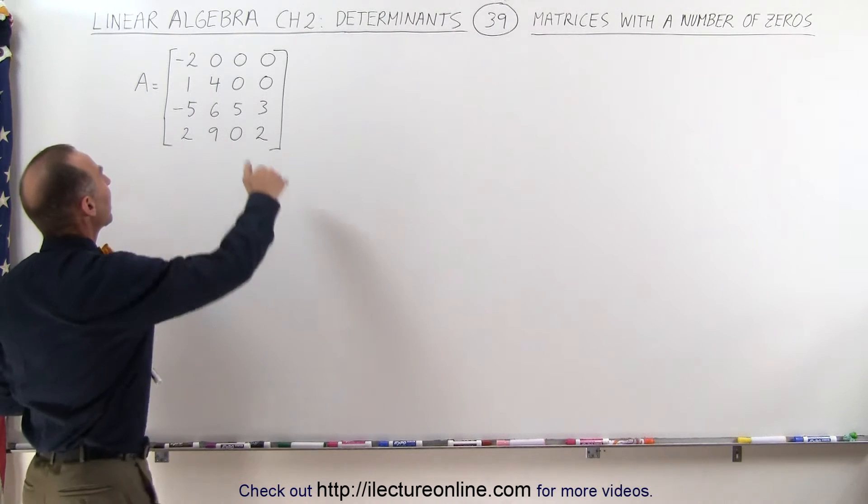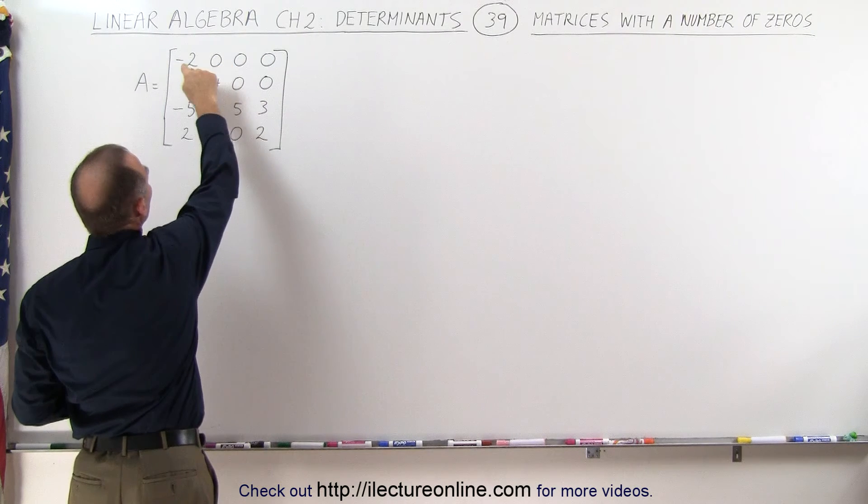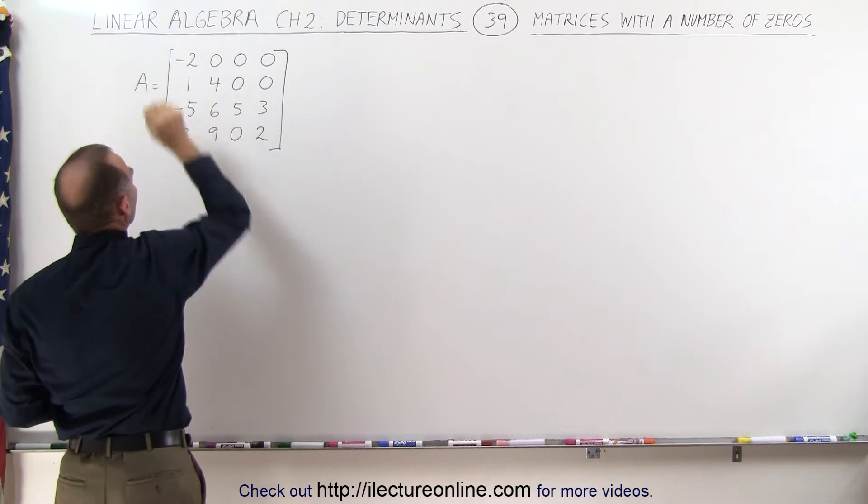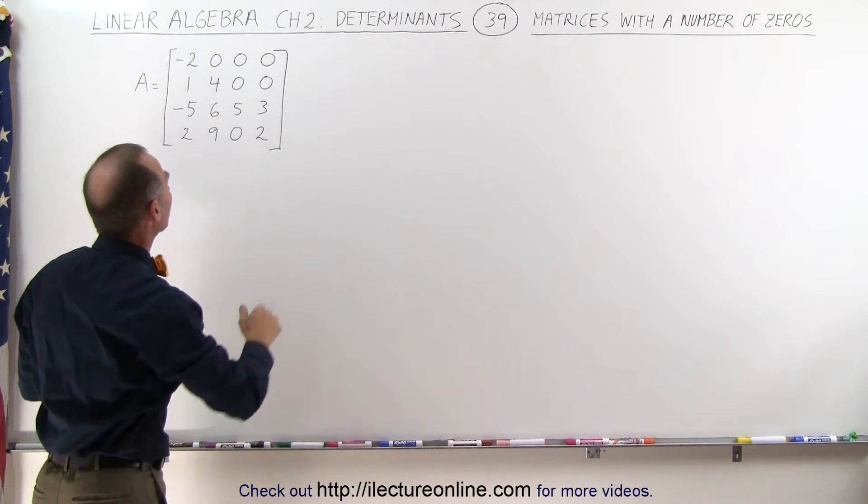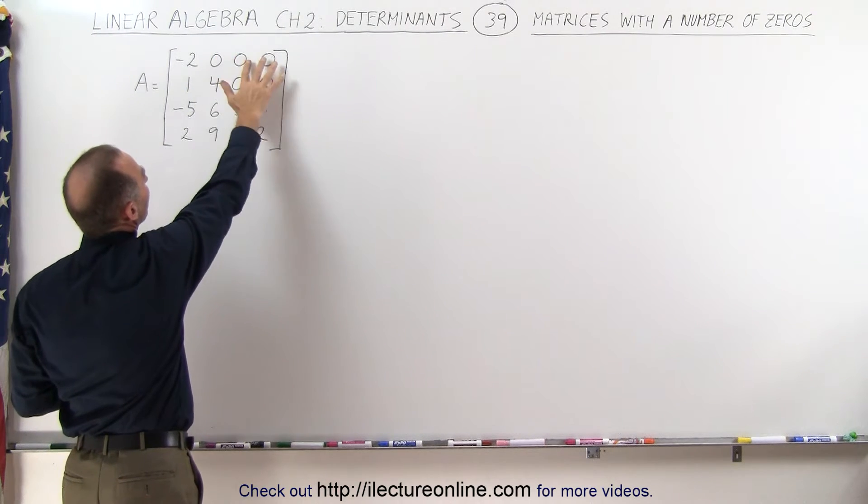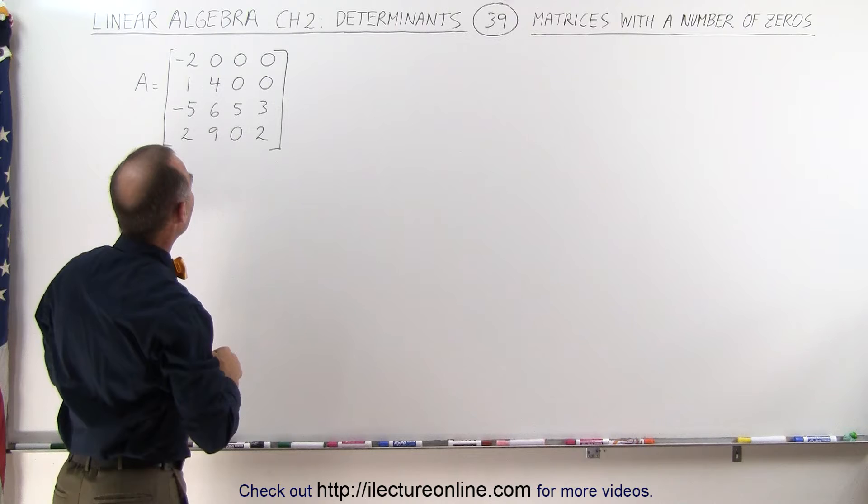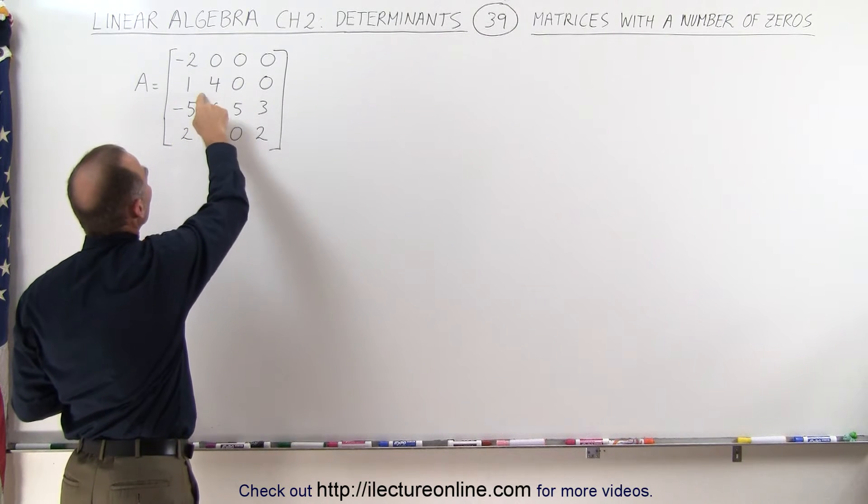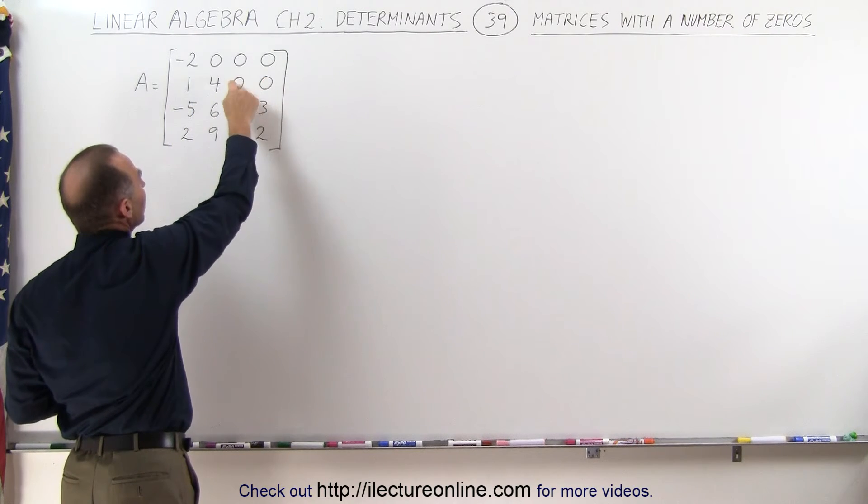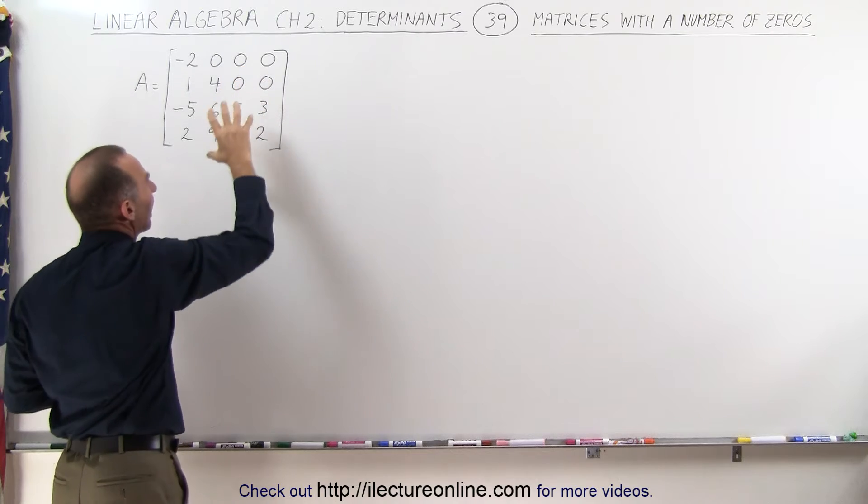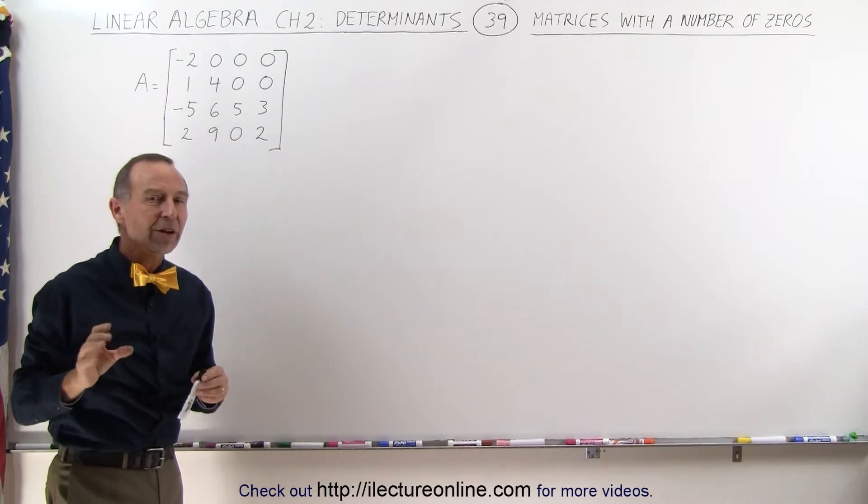For example, if we take the top row we have three zeros and only one of the four elements that has an actual number in it. In other words, we can ignore the other three right there. And then if we go to the second row, also notice that we have lots of zeros here, that means we can ignore all that and the reduction becomes fairly easy.